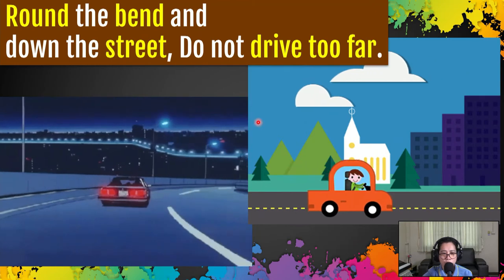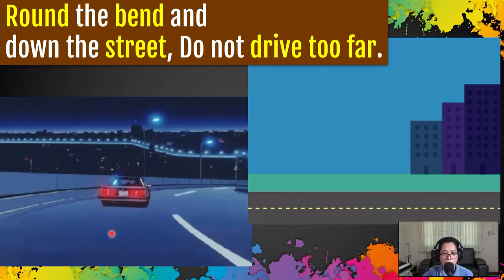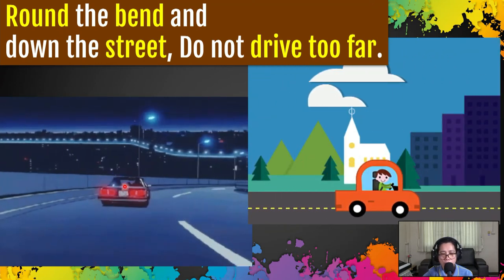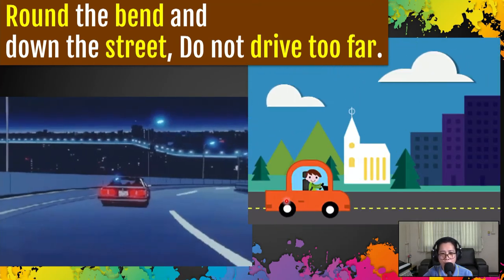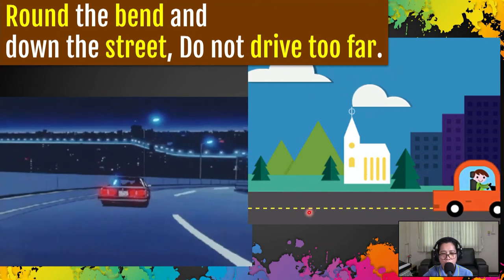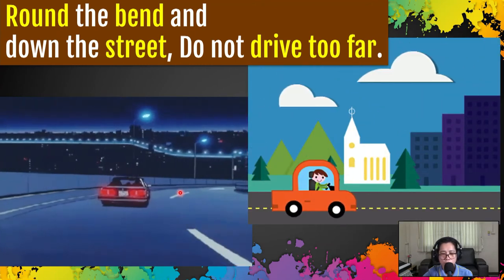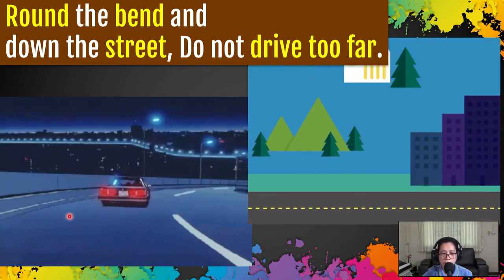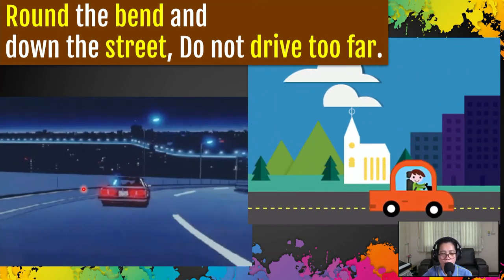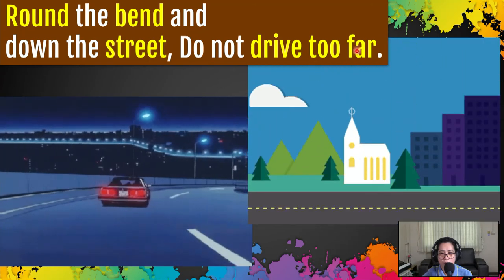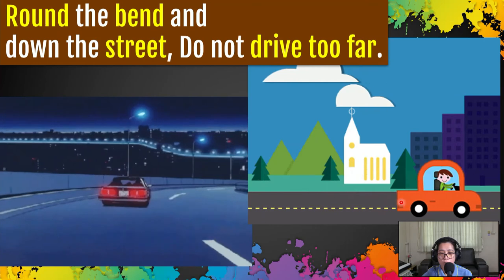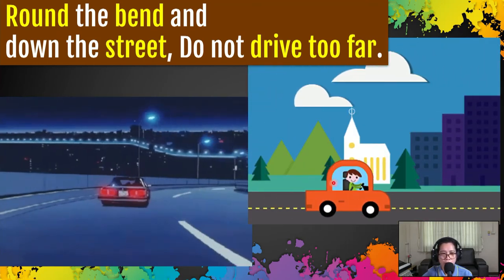Next: round the bend and down the street. Round the bend is when you make a turn — like, this car makes a turn at the corner. Then you go to the street. A street is where both cars and people travel — cars drive on the street, and people can walk on the street, but people should walk on the sidewalk so they will not be in danger of getting into an accident. Do not drive too far means you don't have to drive very far. Far is to a place that is not near to you.